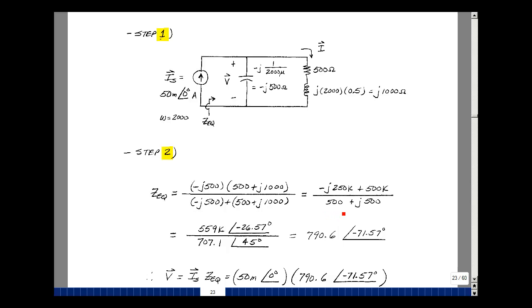The magnitude will be 500 times the square root of 2. But again, if it's the square root of 500 squared plus 500 squared, you get 707.1. The ratio of these two is 790.6. The angle of the numerator minus the angle of the denominator is a minus 71.57.